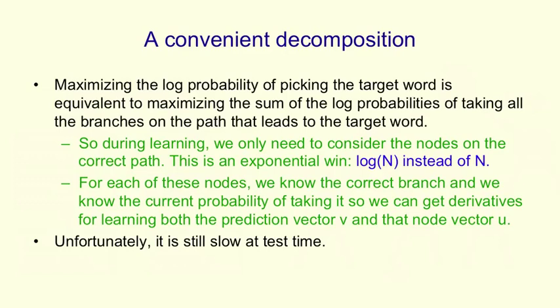For each of those nodes, we know the correct branch because we know what the next word is. We know the current probability of taking that branch by comparing the prediction vector with the learned vector at the node. And so we can get derivatives for learning both the prediction vector V and the learned vector at that node U. This makes the training hundreds of times faster. Unfortunately, it's still slow at test time. At test time, you need to know the probabilities of many words to help the speech recognizer, and so you can't just consider one path.